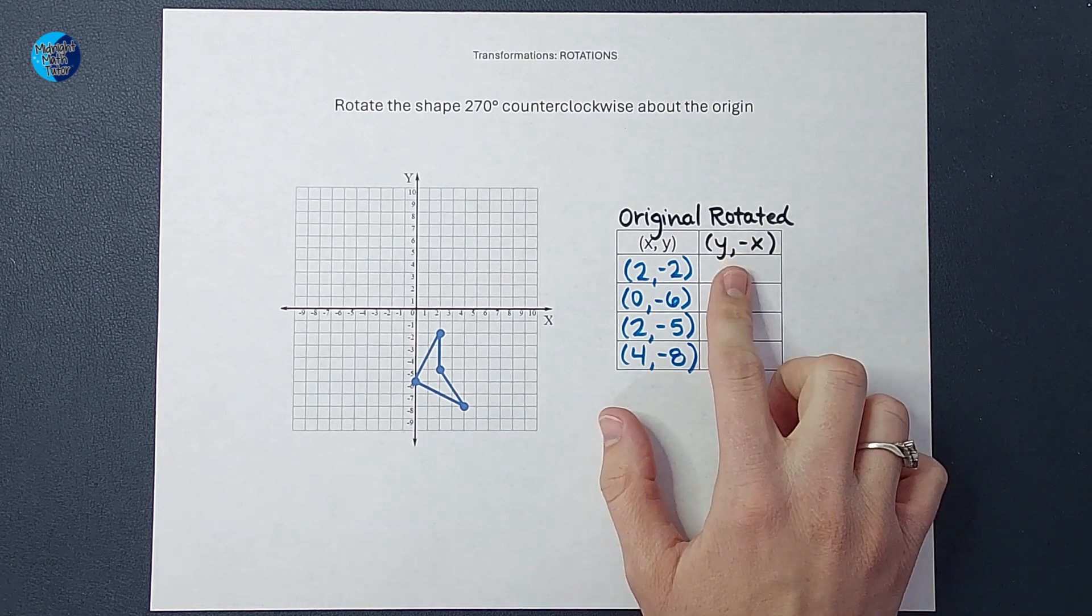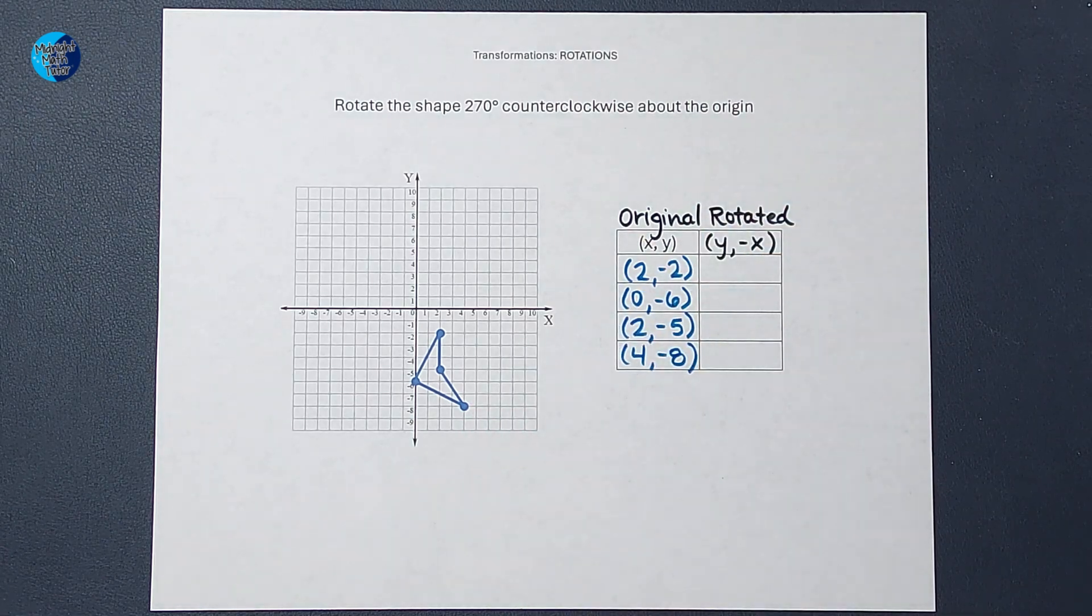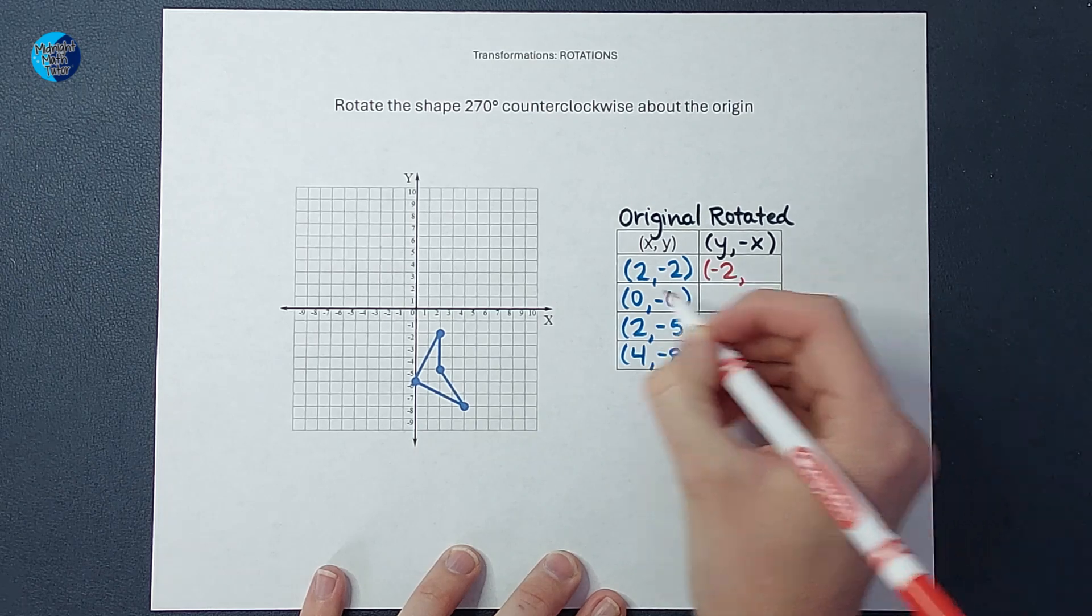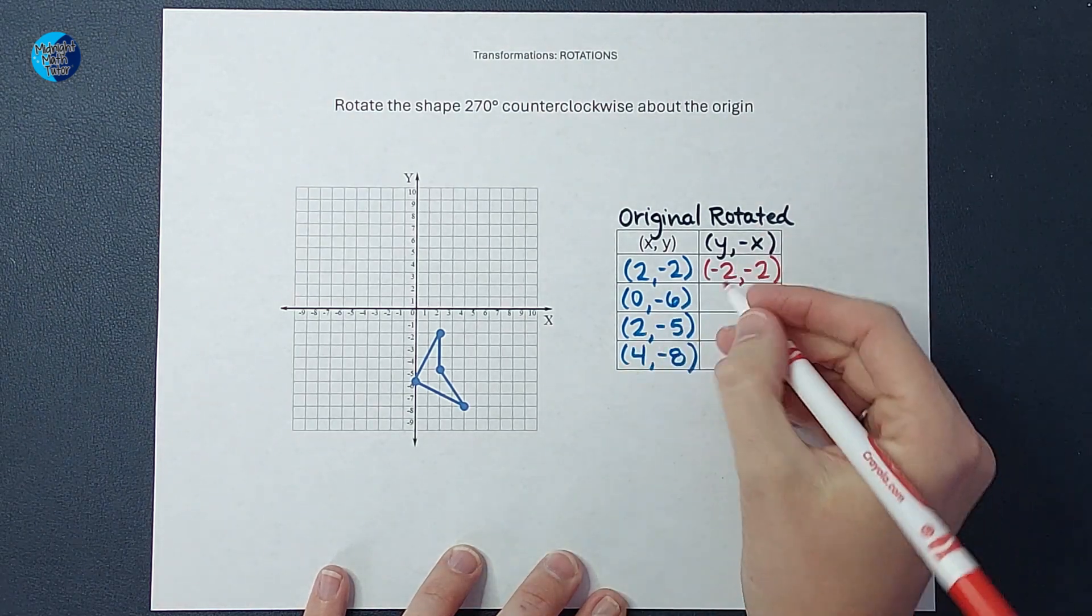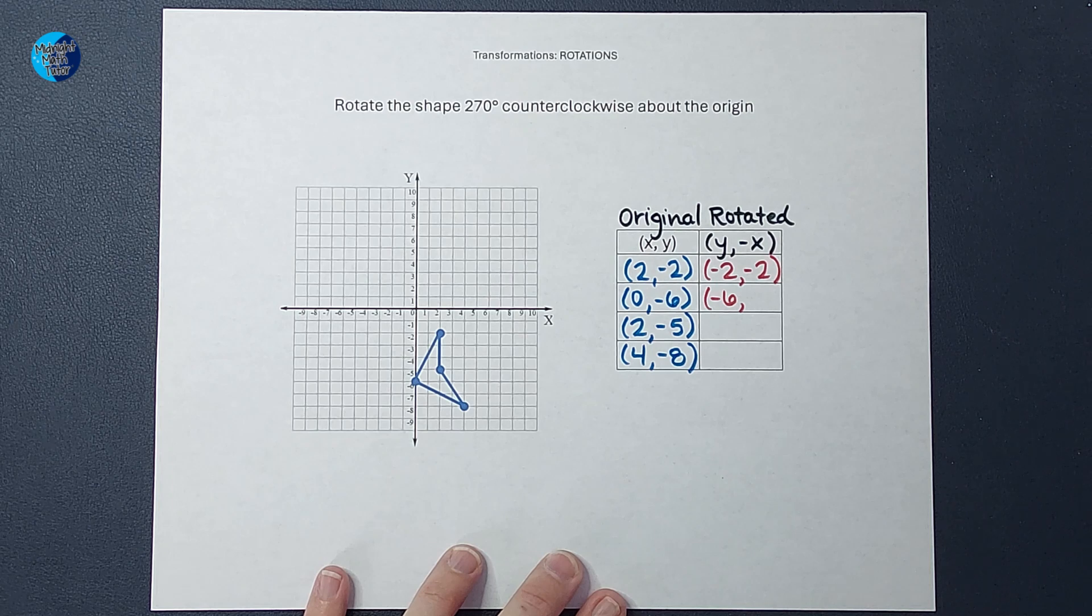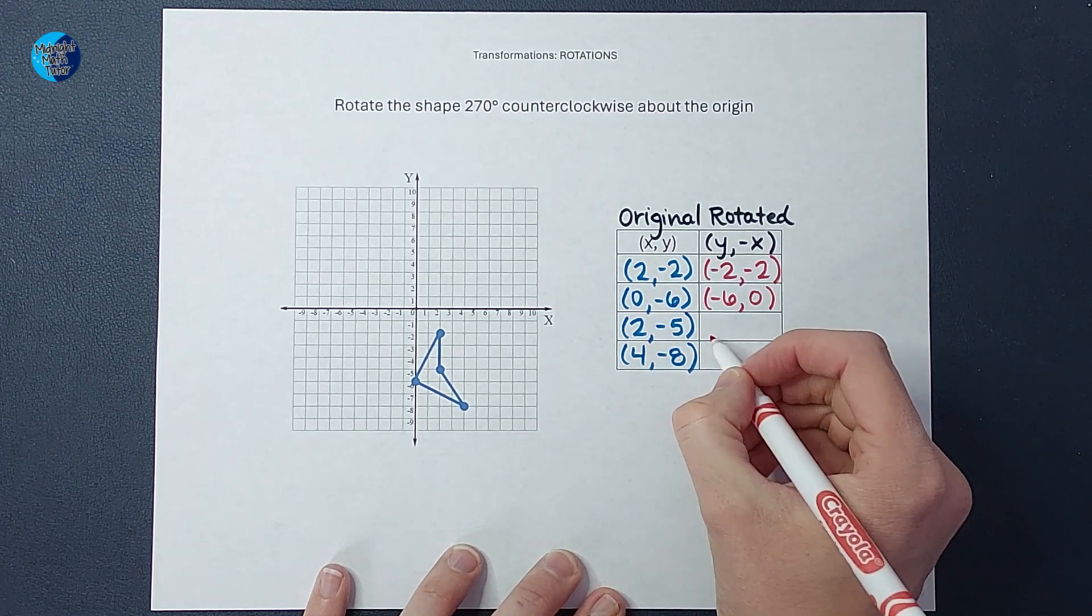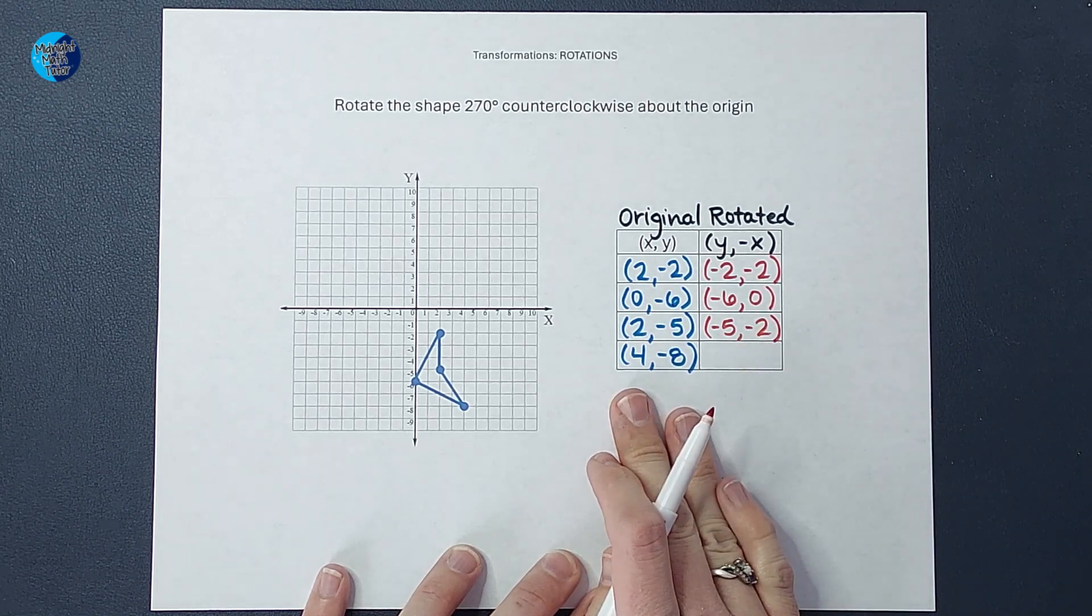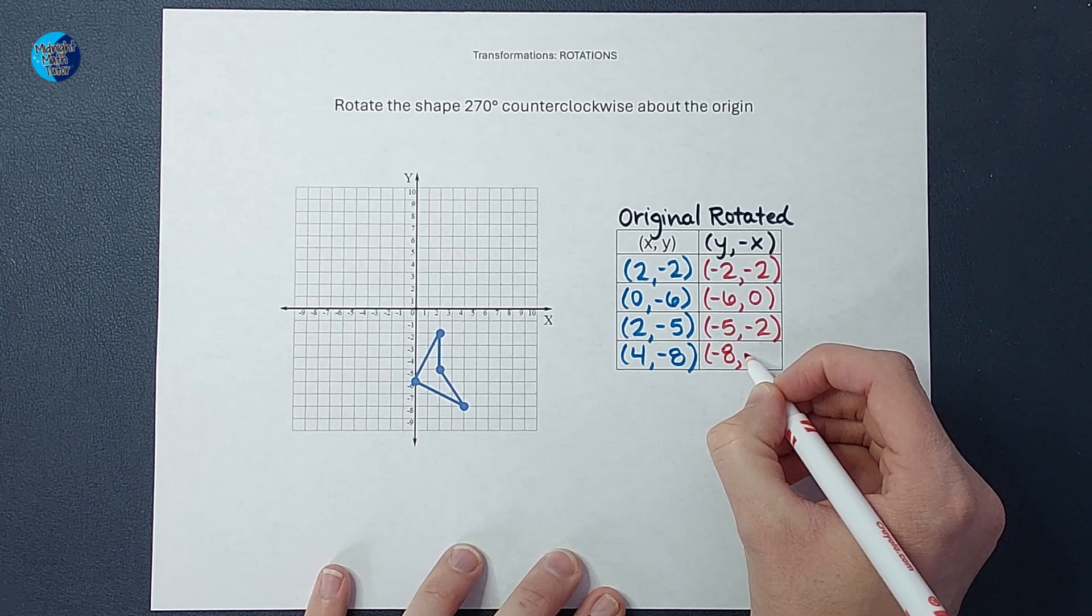The next thing I'm going to do is figure out where the rotated shape is going to be. So I am going to flip them and change x's sign. I'm going to write y first. So I'm going to have negative two, change x's sign so it's positive, so negative two. I'm going to flip them again, write y first, so I have negative six. Then change x's sign, which there's not really a positive or negative zero, so it's just going to stay zero. On this one, I'm going to write y first, so I'm going to have negative five, change x's sign so it's negative two. And then I'm going to write y first, so it's going to be negative eight, change x's sign so it is negative four.